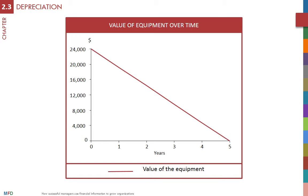Some assets are still worth something at the end of their life. For example, the car might be sold for scrap for 4,000 euros at the end of its life. In that case, its value depreciated 1,500 euros every year rather than 2,000 euros. This is because the value of the car consumed amounts to 12,000 euros — the difference between 16,000 euros, the purchase value, minus 4,000 euros, the scrap value — over an 8-year period.